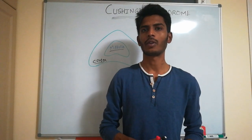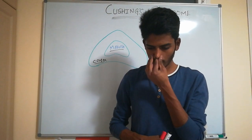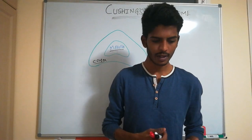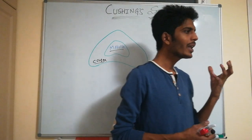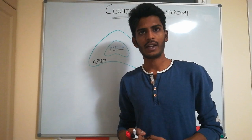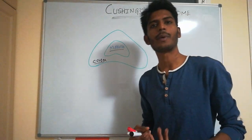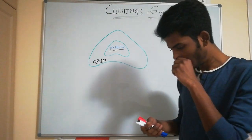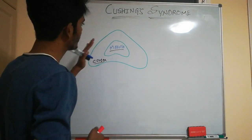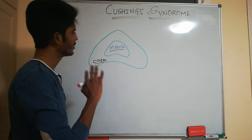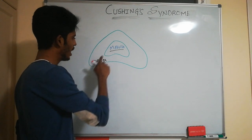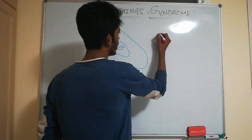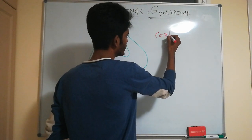In this video we'll talk about Cushing syndrome. Before understanding Cushing syndrome, we need to understand the adrenal gland — its divisions and which part produces what. The adrenal gland is divided into two regions: the inner medulla and the outer cortex — adrenal cortex and adrenal medulla.